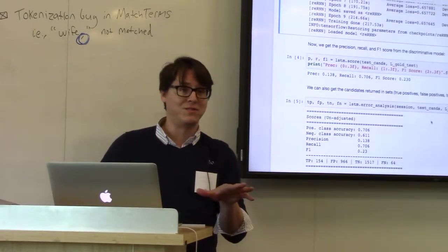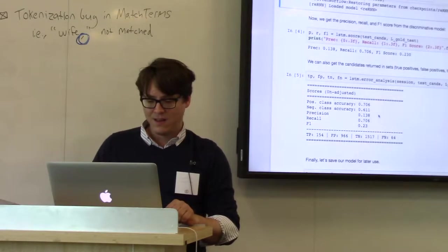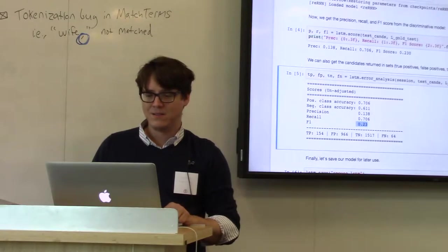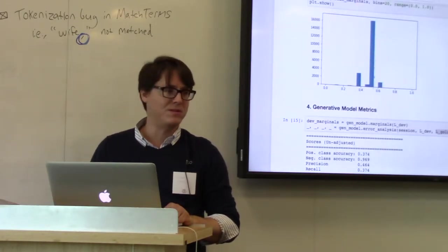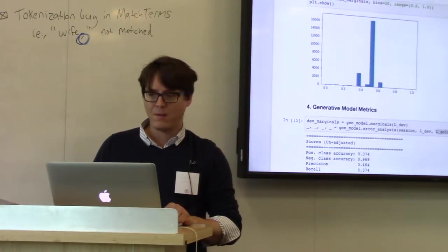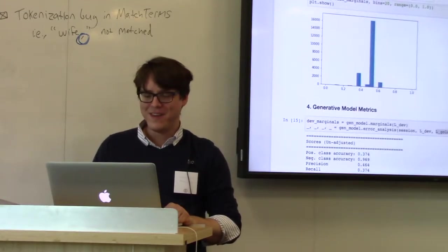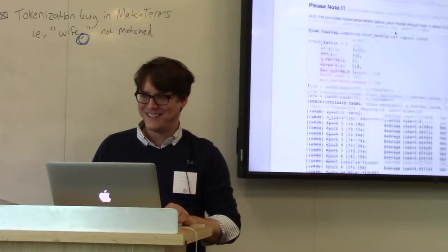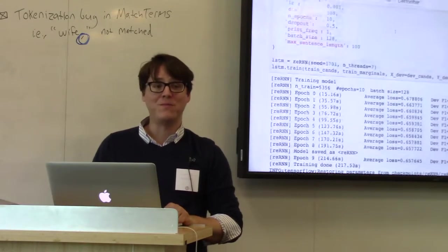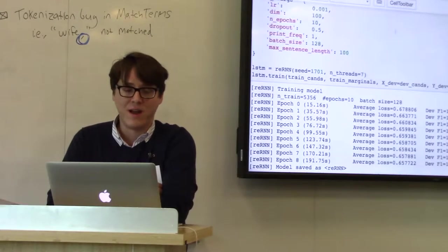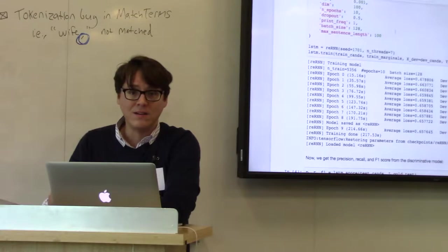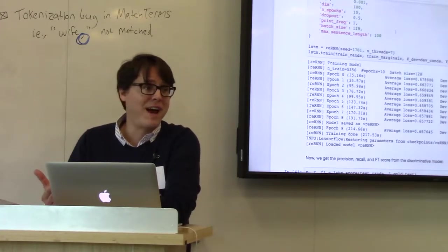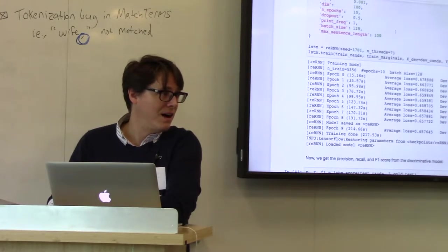I just threw some labeling functions together, trained my model in 214 seconds, and I'm getting an F1 of 23 — a drop from my generative model which was getting 41. The likely reason is I probably just don't have very good coverage. Alex raised a good point that deep learning models are notoriously slow to train — I'm using just 10 epochs, the number of passes through the training data, just so we can do it quickly. If I were to train for 20 or 50 epochs, I guarantee you'd do better. So this score could be artificially low, and we'd hope to see it get close to or slightly better than the generative model.